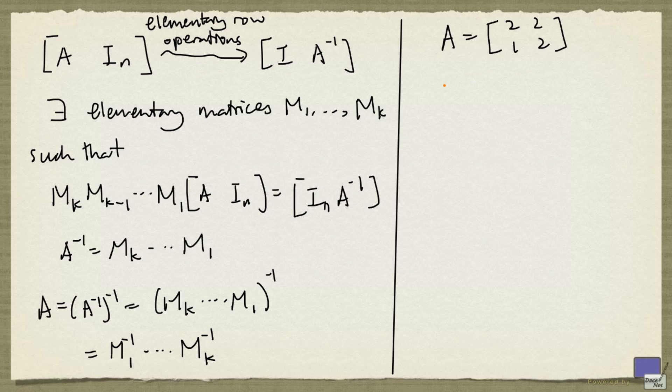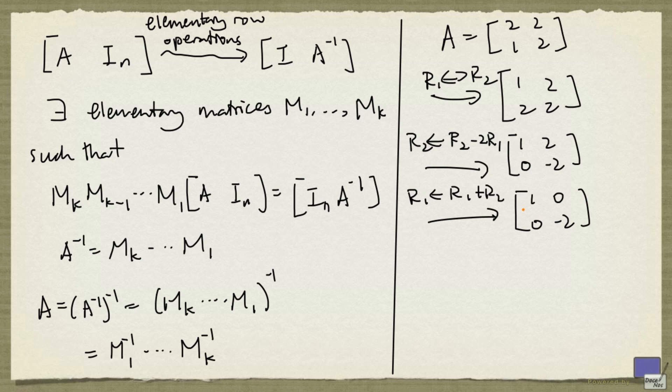So if I start off with this matrix and interchange rows 1 and 2, I get this. And if I subtract 2 times row 1 from row 2, I get this. And if I add row 2 to row 1, I get this. And finally, if I multiply row 2 by negative 1 half, I'll get the identity matrix.